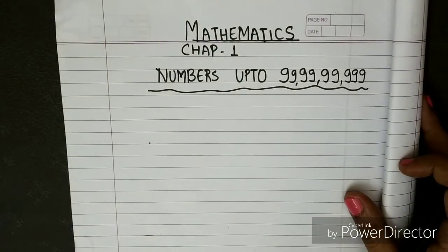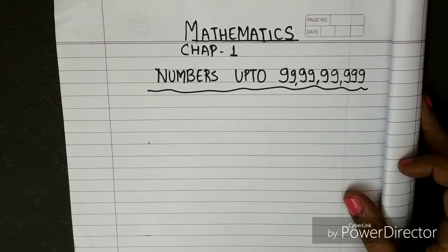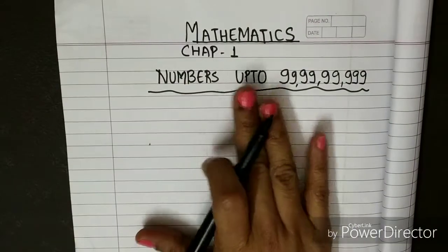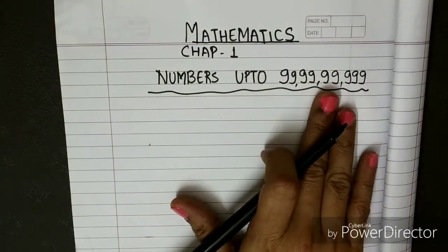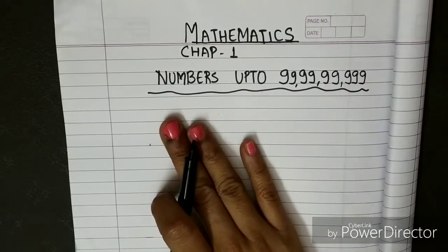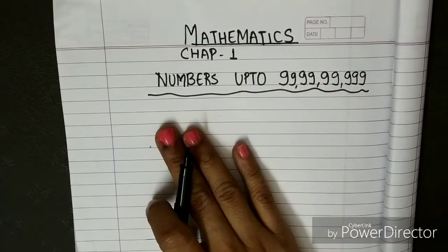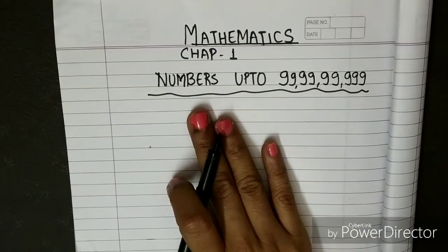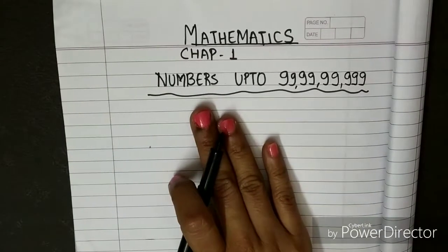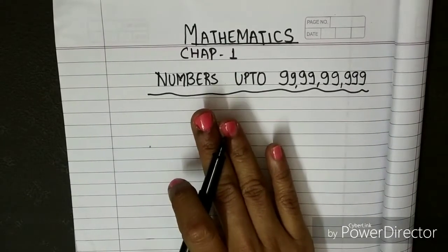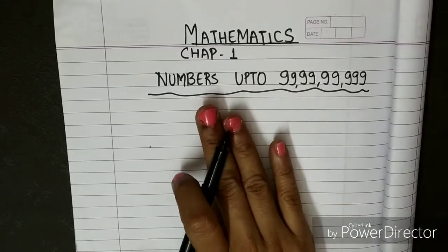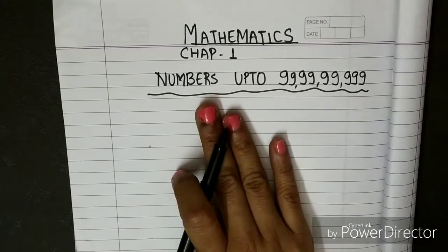Good morning students, welcome to the new class, that is Class 5. Today we are having a mathematics class and we are going to start with the new chapter: numbers up to 99 crore 99 lakh 99999. You can use your copy, rough copy, or loose sheets — don't worry about it. When the lockdown opens, you can do all the work in a new copy.